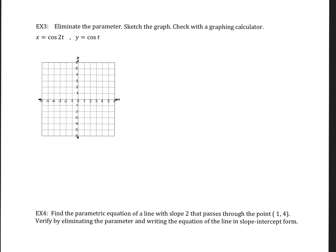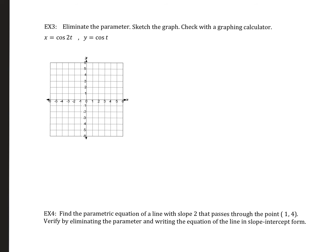Example three: eliminate the parameter, sketch the graph, and check with a graphing calculator. We have x = cos(2t) and y = cos(t). It won't be a circle since this uses cosine, not sine. The easiest approach is to use a known trig identity. I know that cos(2t) = 2cos²t − 1, which uses both values we're working with.